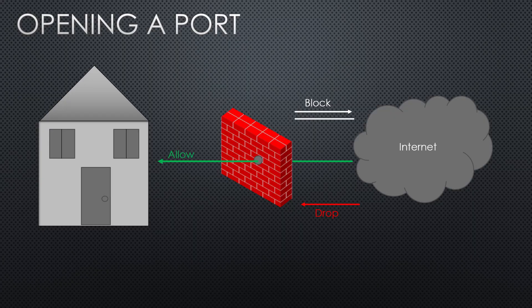Now let's talk about the types of rules that can exist. It's fairly simple. You can write a rule to allow traffic, to block traffic, or to drop the request altogether. That's it — three simple rules. So we know where we can put the rules and what actions we can take.